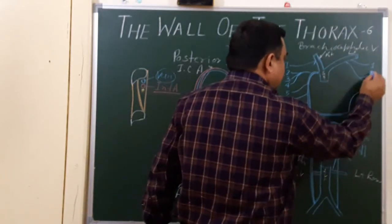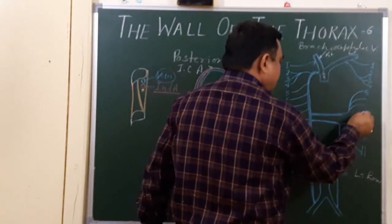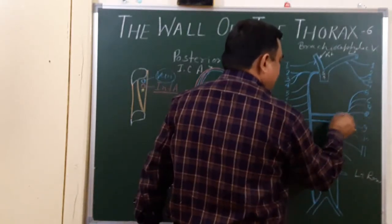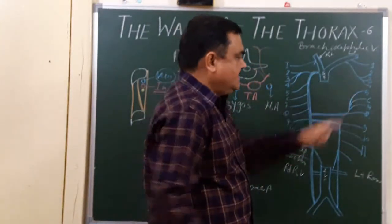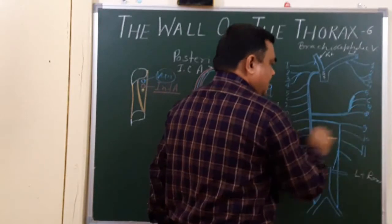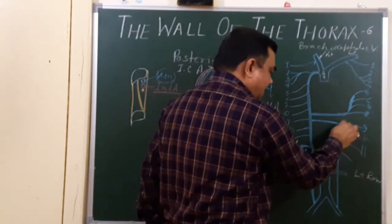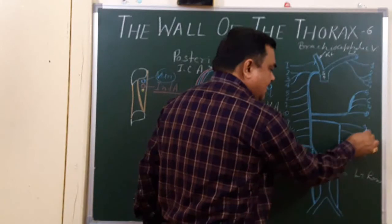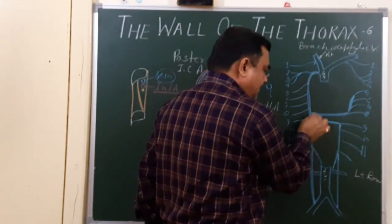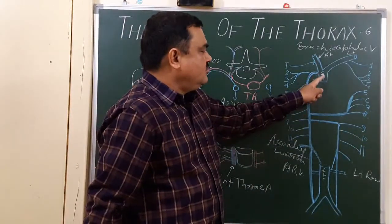The 5th, 6th, 7th, and 8th posterior intercostal veins on the left side drain into the accessory hemiazygous vein. The hemiazygous drains the 9th, 10th, and 11th. Both the accessory hemiazygous and the hemiazygous ultimately drain into the azygous vein, and the azygous vein drains into the superior vena cava.